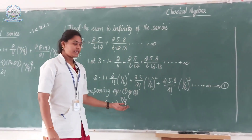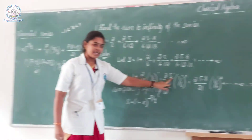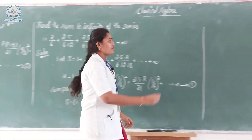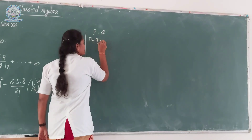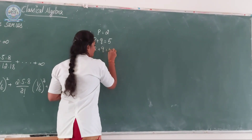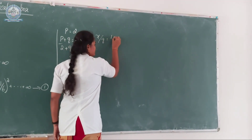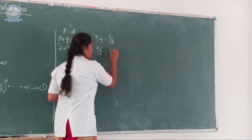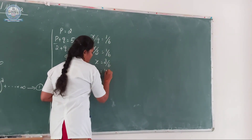Comparing the two equations: p is equal to 2, p plus q is equal to 5, and x by q is equal to 1 by 6. From p equal to 2 and p plus q equal to 5, substituting p gives 2 plus q equal to 5, so q is equal to 3. Then x by q equal to 1 by 6 means x by 3 equal to 1 by 6, so x is equal to 3 by 6, which gives x equal to 1 by 2.